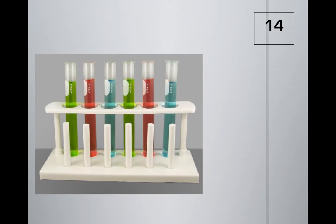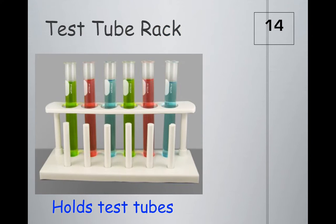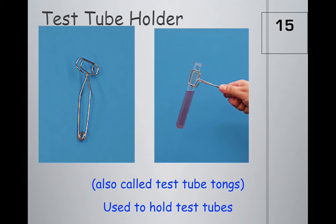These test tubes are placed in plastic holders called a test tube rack - this one is plastic and holds the test tubes. Sometimes you don't want to hold test tubes with your fingers. These are test tube holders, also called test tube tongs - they're metal and look like tongs. They're used to hold test tubes.